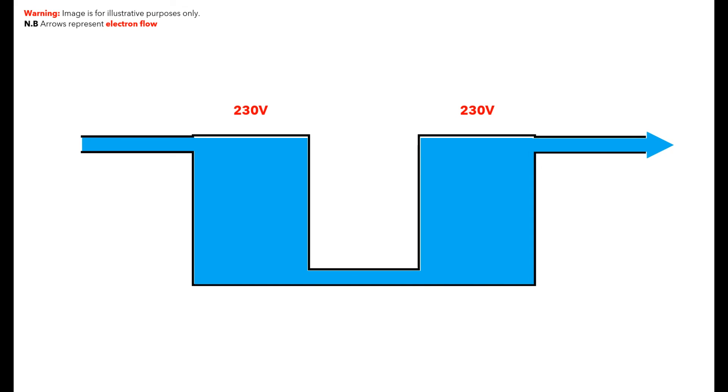However, if current isn't flowing, then the safety devices will not operate, so the reality is that we need somewhere for that current to flow, in order to keep the current flowing fast enough and long enough, that the protective devices will operate and switch off the supply.